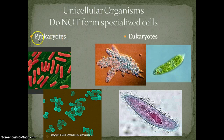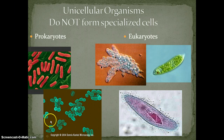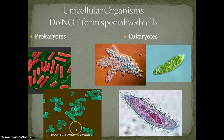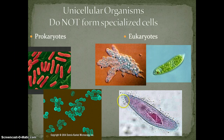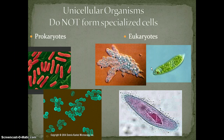Notice there are prokaryotic cells and eukaryotic cells. Right here are bacteria — they could be archaebacteria, they could be eubacteria. Either way, they don't form specialized cells. These prokaryotes have no nucleus. These eukaryotic cells are still unicellular — only one cell big. This is the amoeba, the paramecium is over here. You can see the little hairs around the outside; those hairs are called cilia, which help the paramecium swim. And this one is the euglena. All of them are single cells, so they do not have specialized cells.